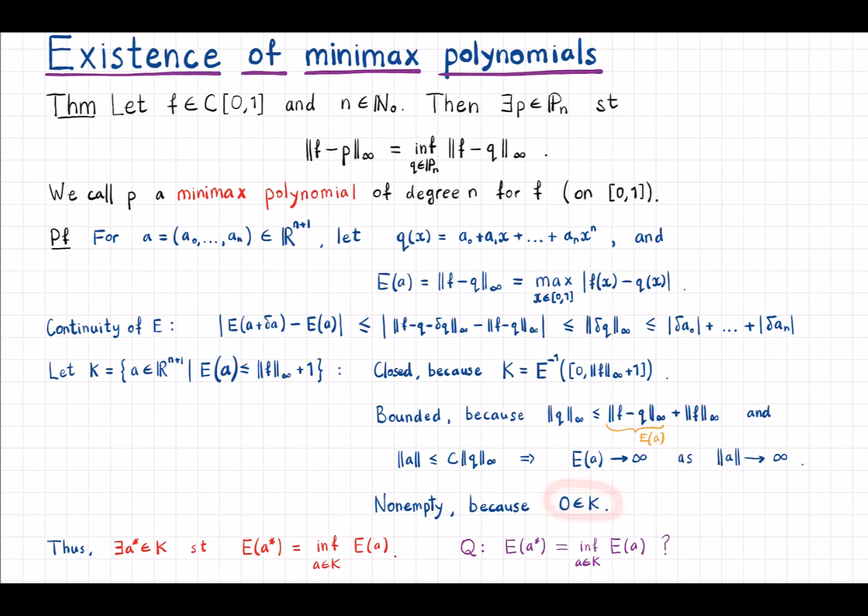Finally, K is non-empty because zero is in K. E(0) would be just the norm of f, and the norm of f is smaller than the norm of f plus one. So zero is in K.